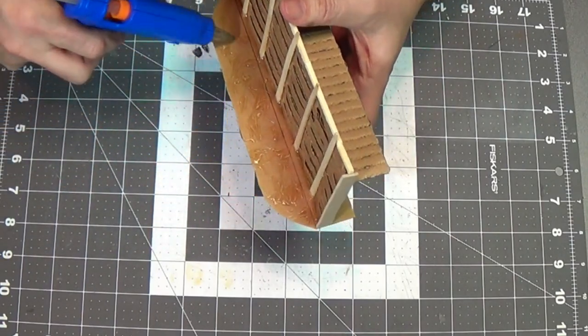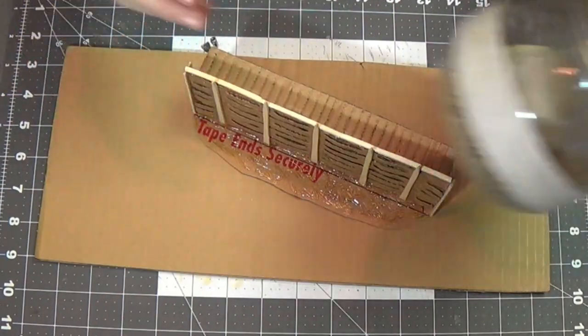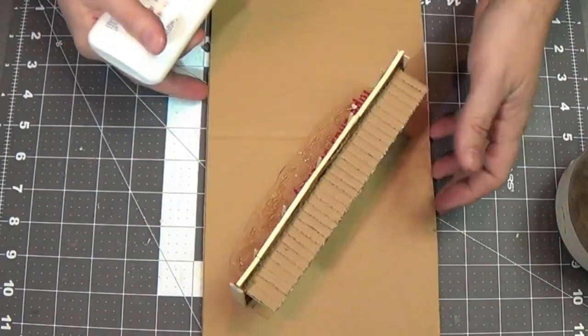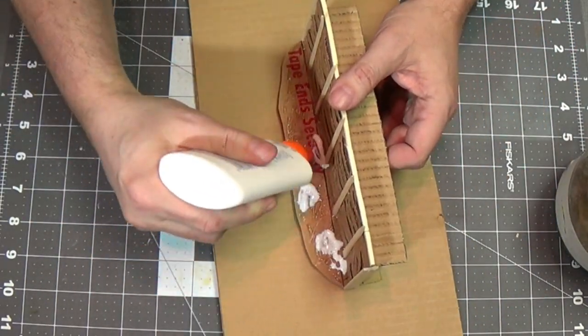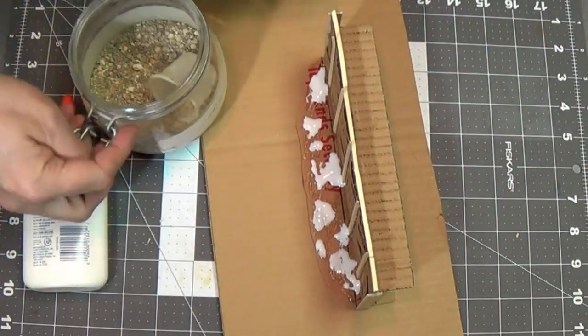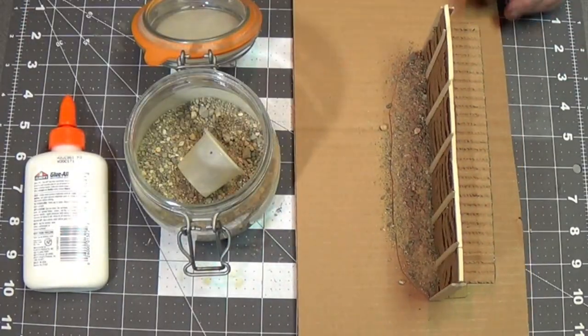And then just drag some hot glue around on the base to make it look like soil or ground. Just really easy with the long nozzled hot glue gun. And then I'm going to use my construction sand and white glue, and just add some spots there, and dump some sand on there and let it dry.